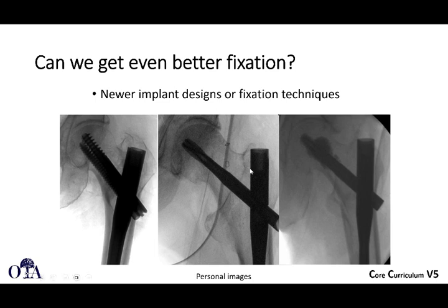Here are some alternative fixation techniques. On the left, a sliding hip screw device with two screws to provide better rotational control. There's also a device that uses a helical blade to remove less bone during fixation. And another device where you actually inject cement through fenestrations in the screw itself to occupy the bone void and improve fixation.